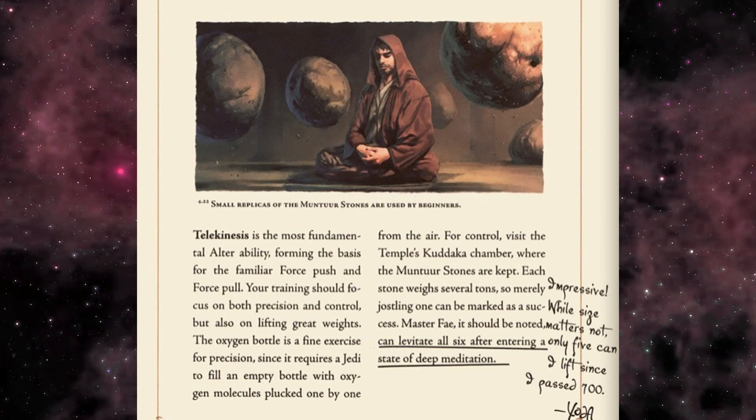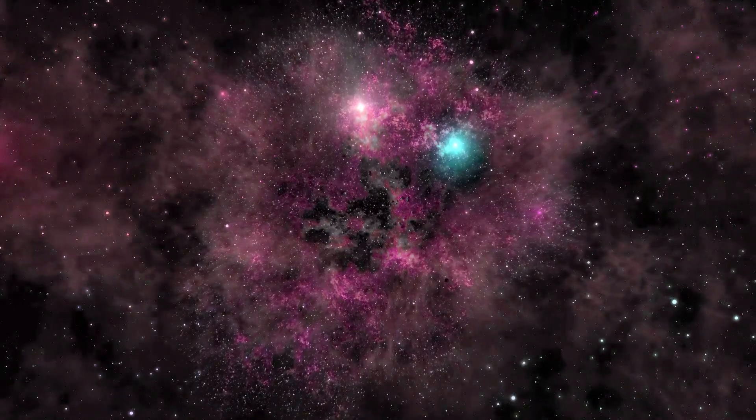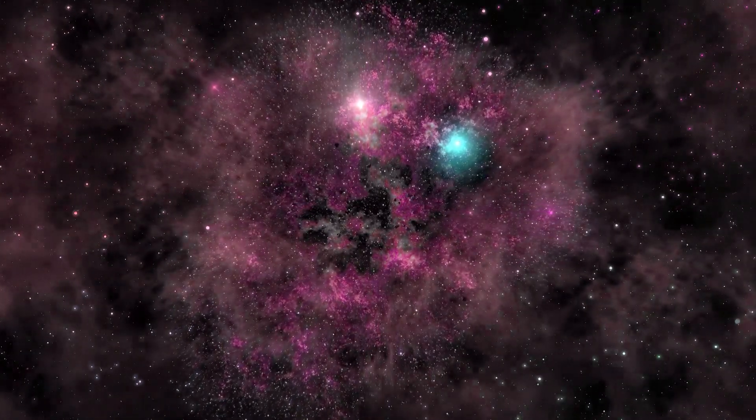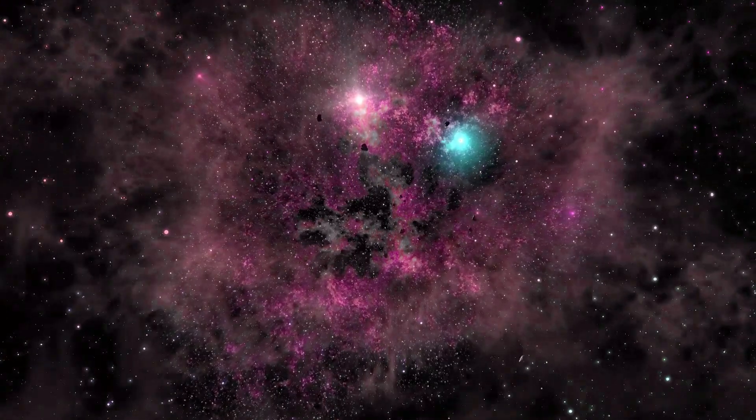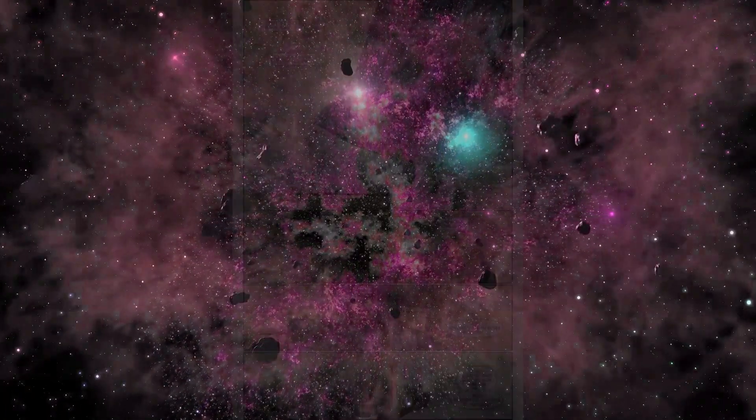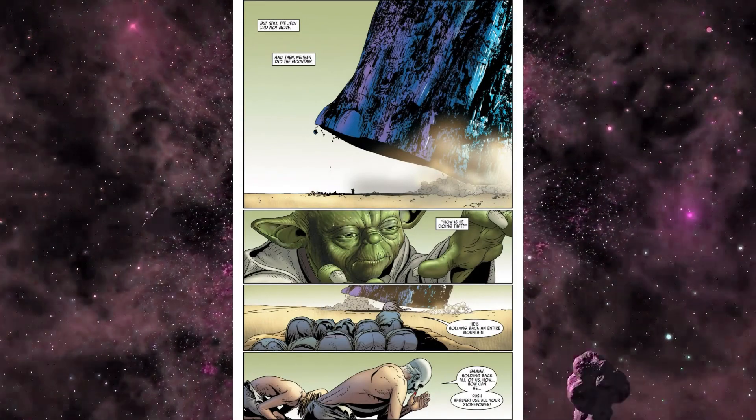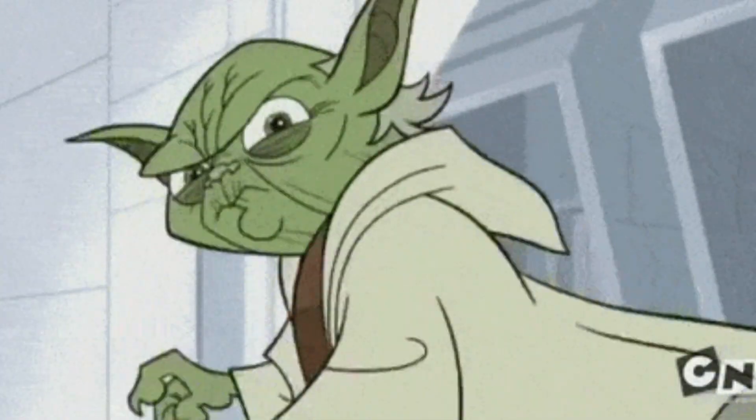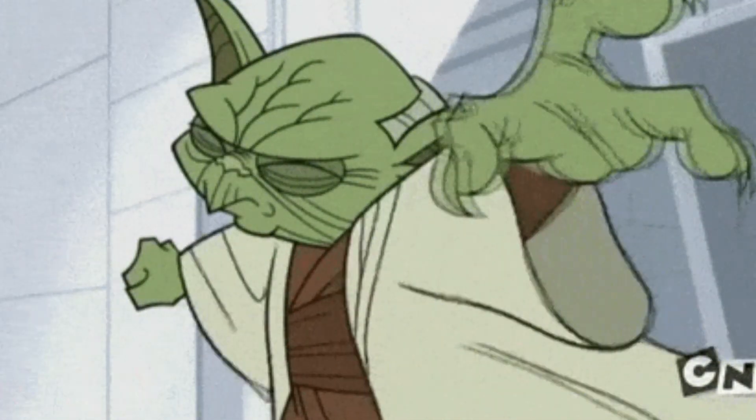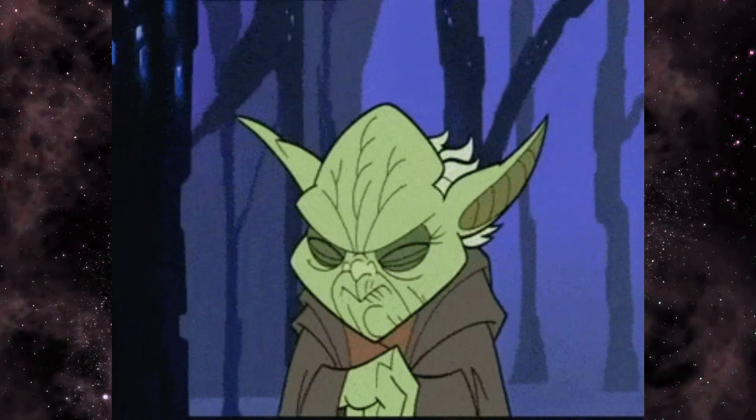As we can see, Grandmaster Yoda admires Grandmaster Faye Coven for lifting six of the stones, stating that he can only lift five as of the prequel era, yet we can clearly see Yoda lifting more than the amounted weight of all the stones. It bears the question: if Yoda, someone who can only lift five of the stones, can achieve this level of telekinesis, what might Furlien Snee, someone who can lift all seven stones, be capable of?